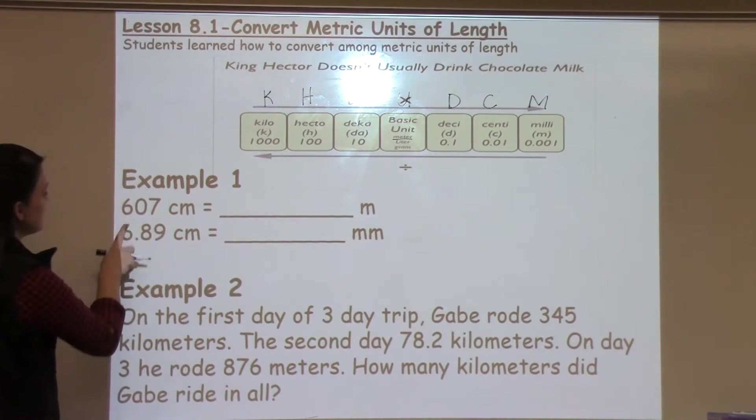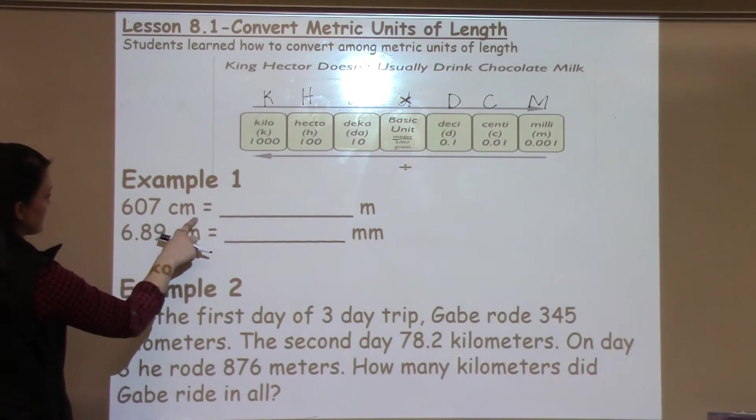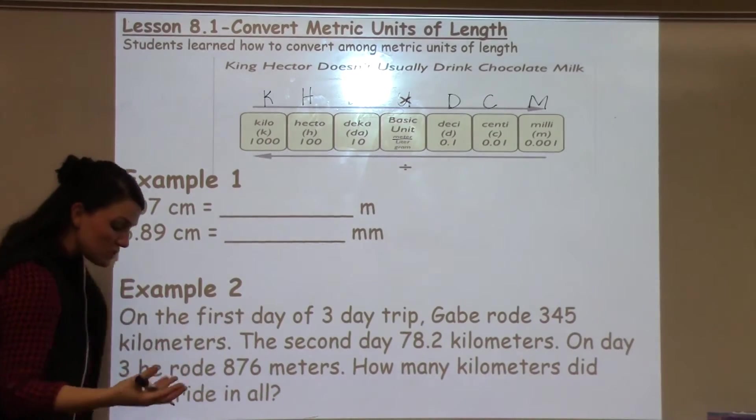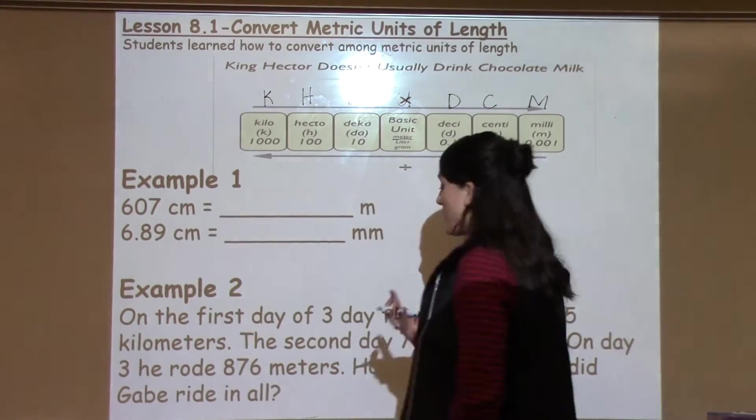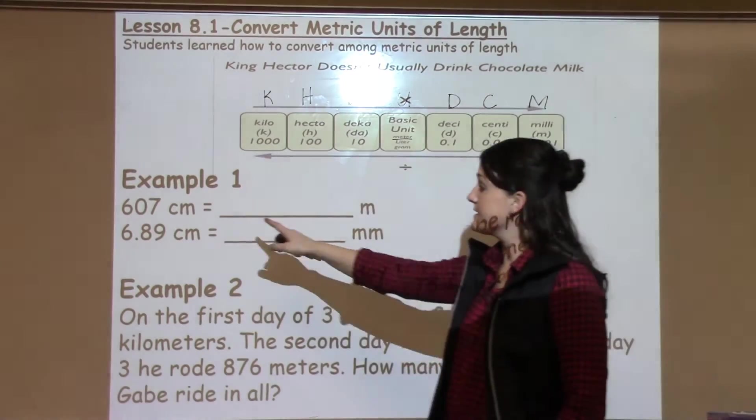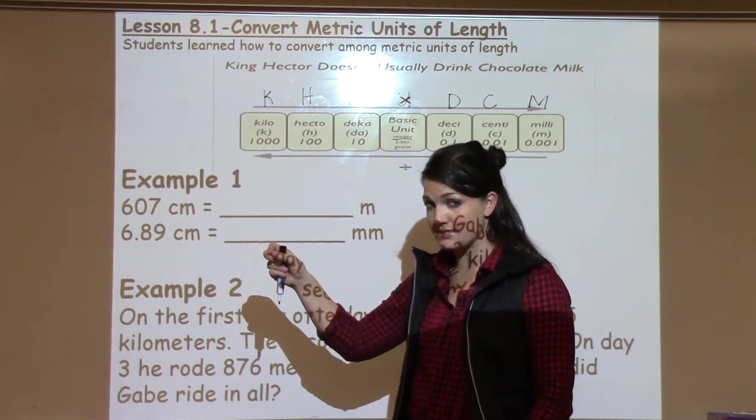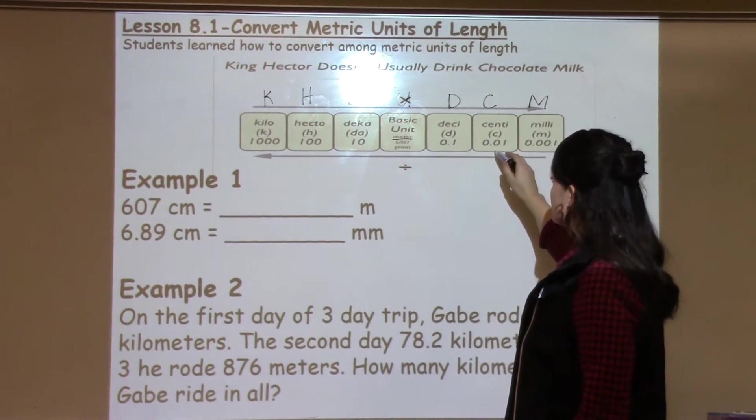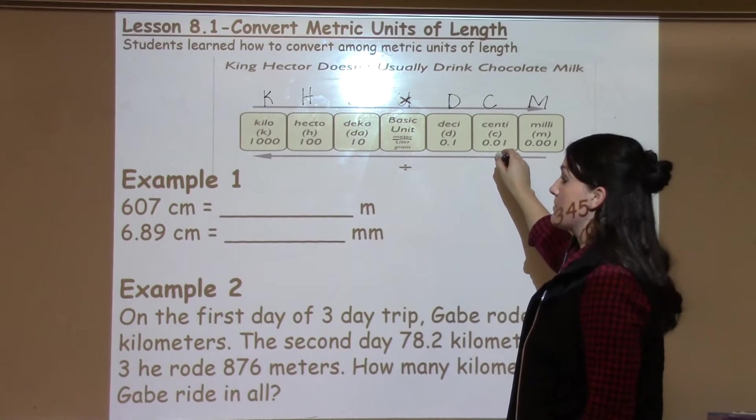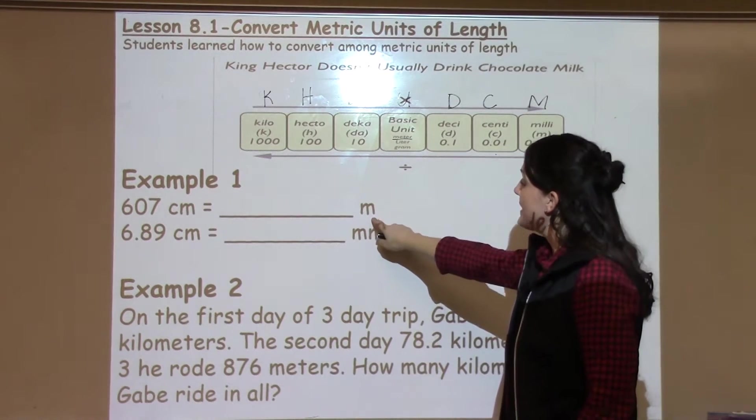So let's look at an example. It says 607 centimeters equals how many meters. What we have students do is start with what they have a number for. For instance, here I have a number for centimeters, so that's where I'm going to start. I'm going to start with centimeters. Then I want to go to meters.